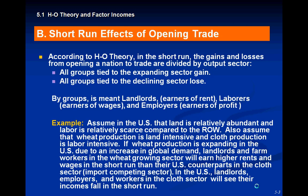In the short run, the Heckscher-Olin theory states that gains and losses from trade are divided by the output sectors. All groups — such as landlords which earn rent, laborers which earn wages, and employers which earn profit — in the expanding sector will gain in the short run, and all groups in the declining sector will lose in the short run.